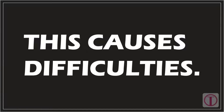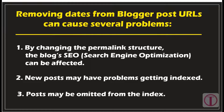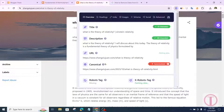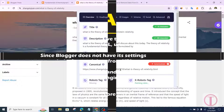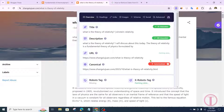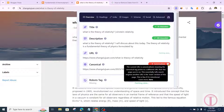Removing dates from blogger post URLs can also cause several problems. By changing the permalink structure, the blog's SEO (search engine optimization) can be affected. New posts may have problems getting indexed, and posts may be omitted from the index. Disclaimer: there is no need to remove the time and date from the blogger post URL unless it is very important, since Blogger does not have its own settings to exclude time and date from URLs. So by removing the date and time, the blog's SEO can be affected — you will do more harm than good, so do it wisely.